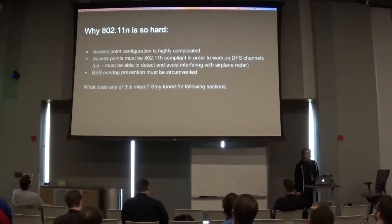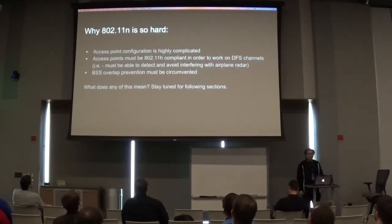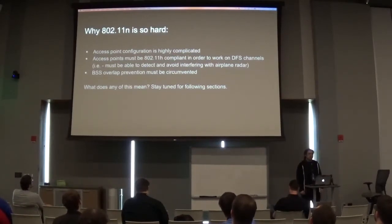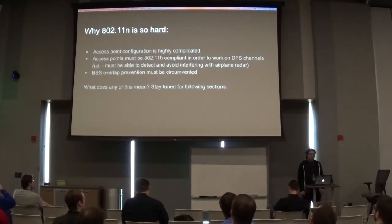Let's talk about why 802.11n is so hard. For one thing, configuration is highly complicated. If you're trying to configure a rogue AP using 802.11g, you just give it a channel, a BSSID, a network name, a few parameters, and stand it up and it works. It's a little more complicated with these high-throughput and very high-throughput protocols.